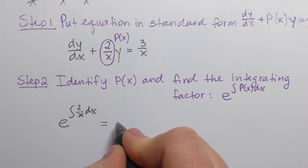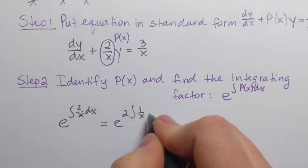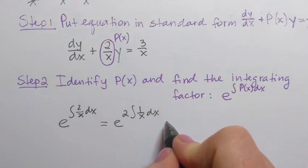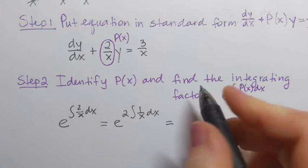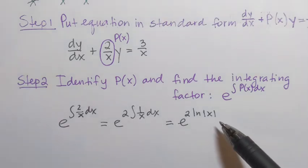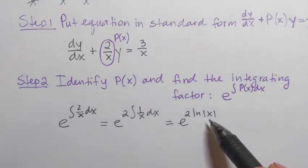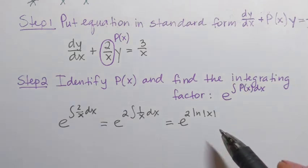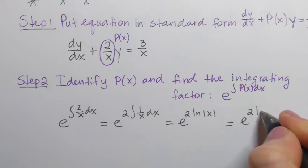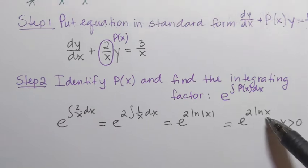At this point we simplify. For this example, we drop the absolute value and write 2 ln(x), but we must note that x must be greater than zero to satisfy the domain of the logarithmic function.